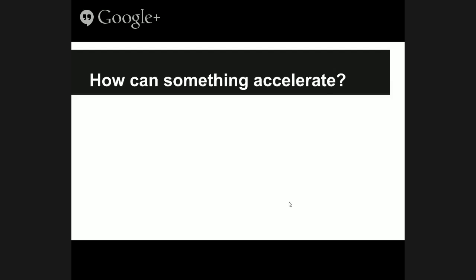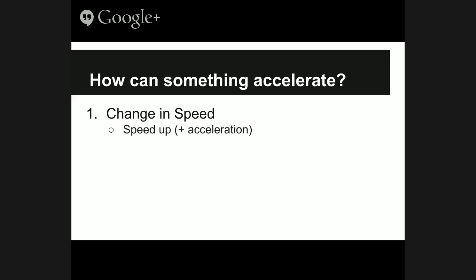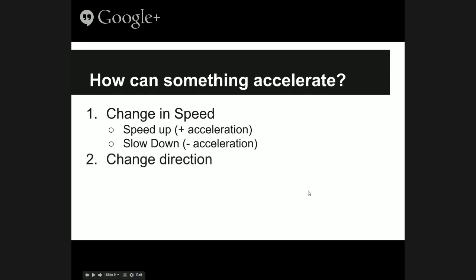So how can something accelerate? There are a few ways. Number one is change in speed. An object can accelerate by either speeding up — we call that positive acceleration — or slowing down, which we call negative acceleration. The other thing that's hard to think about is that something can also accelerate by changing its direction. Every time you change direction, regardless of whether you're speeding up or slowing down, you're also accelerating, because acceleration is the change in velocity — which includes speed and direction — over time.